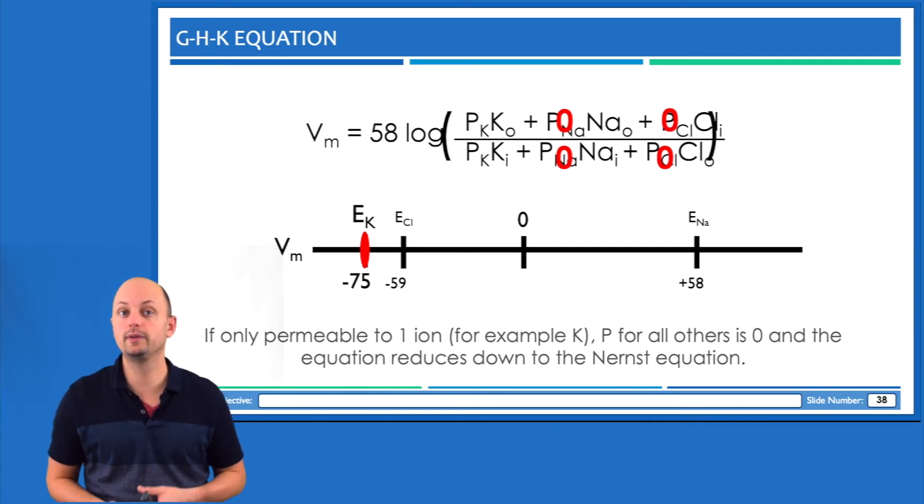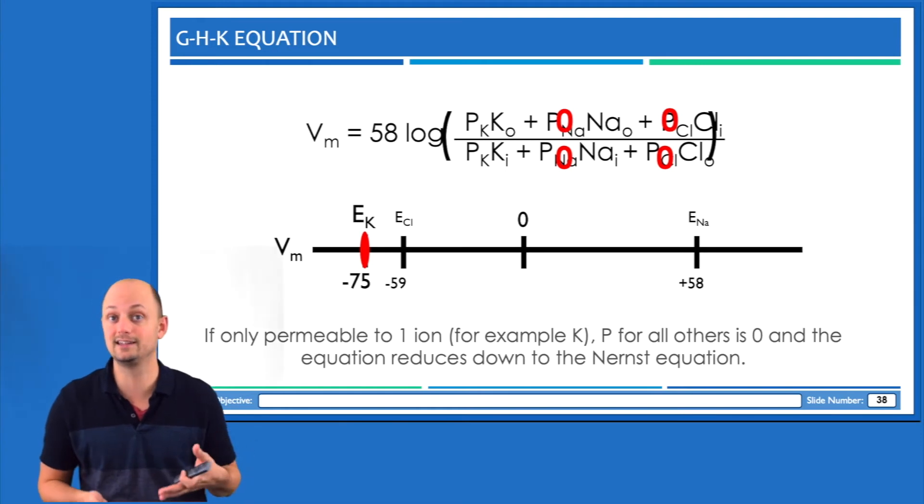So changes in membrane potential are ultimately the basis of all muscle contraction and all signaling in the nervous system. This really becomes critically important across the next couple of units and into next semester.